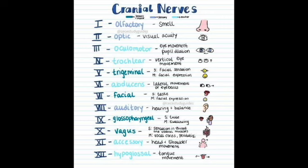For cranial nerves and reflexes: CN3 opens the eyelids; damage causes ptosis. CN7 closes the eyelids. For the pupillary reflex, CN2 is the afferent (sensory, takes in light) and CN3 is the efferent (motor), which constricts consensually. For the corneal reflex, CN5 (trigeminal) is the afferent sensory component, and CN7 (facial nerve) is the efferent motor component.